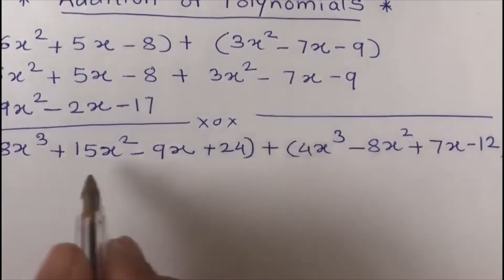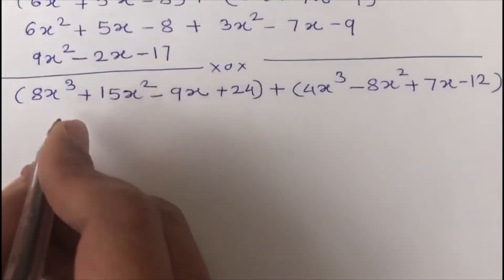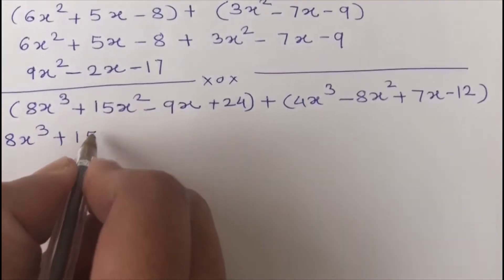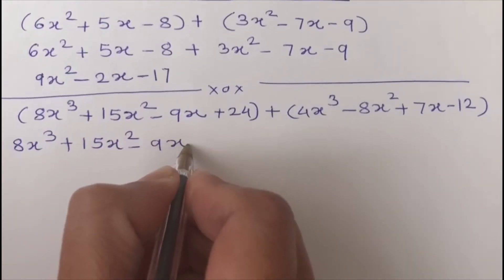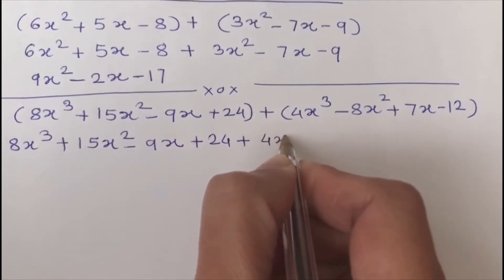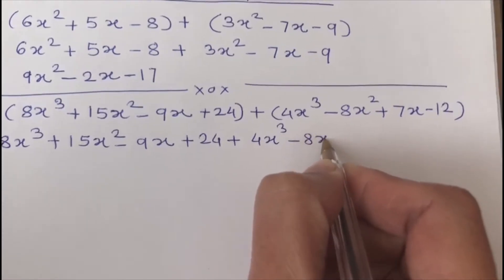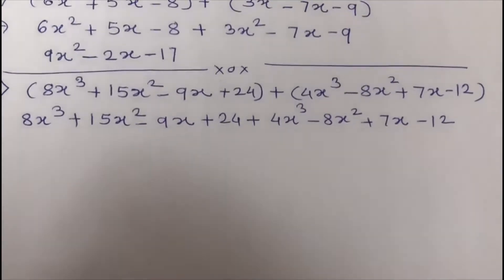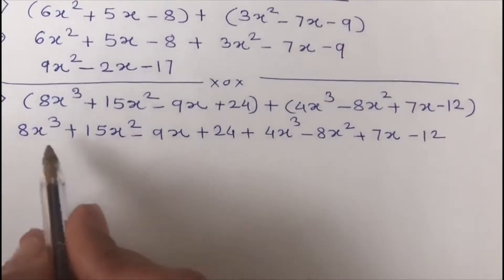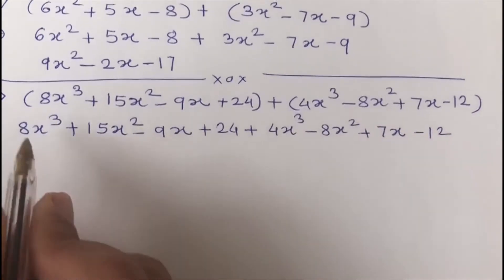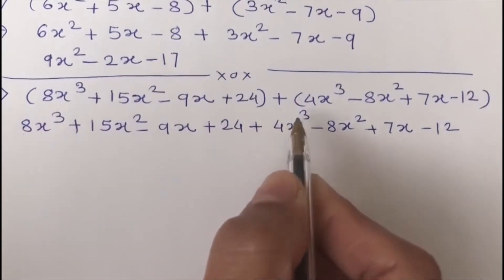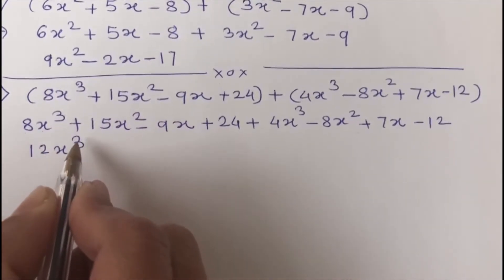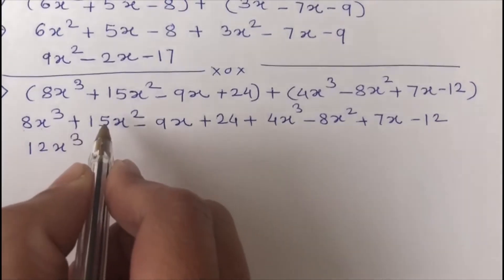To add these polynomials, first I write them without brackets: 8x cubed plus 15x squared minus 9x plus 24 plus 4x cubed minus 8x squared plus 7x minus 12. The highest degree terms are 8x cubed and 4x cubed. When we add them, it gives us 12x cubed, where x is raised to the third power.